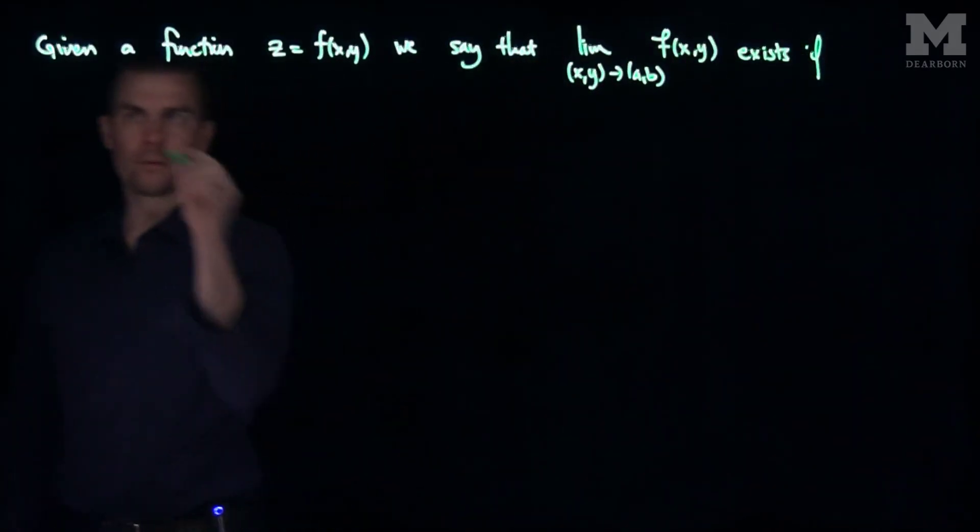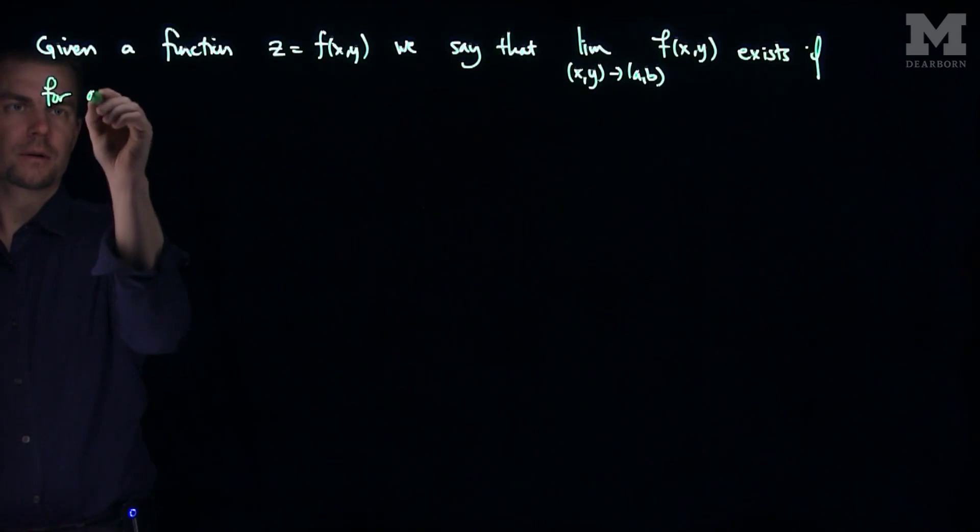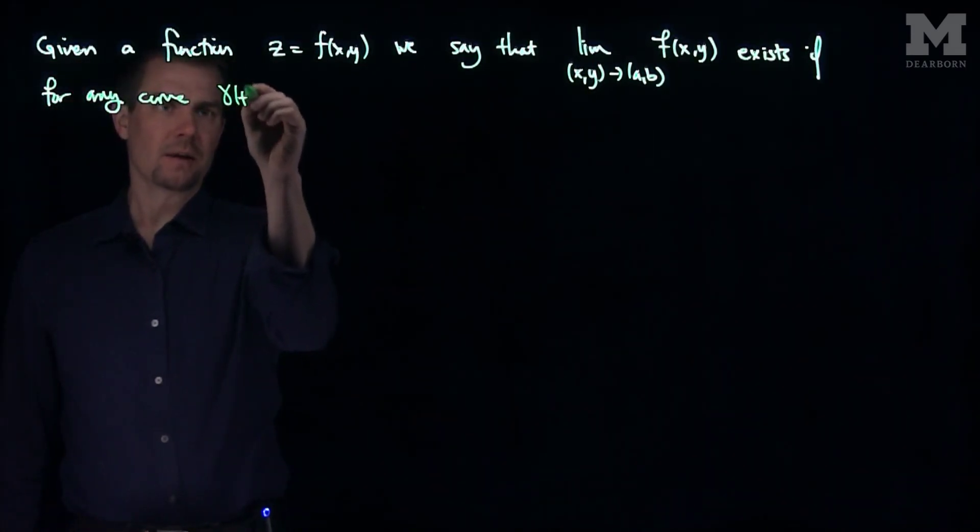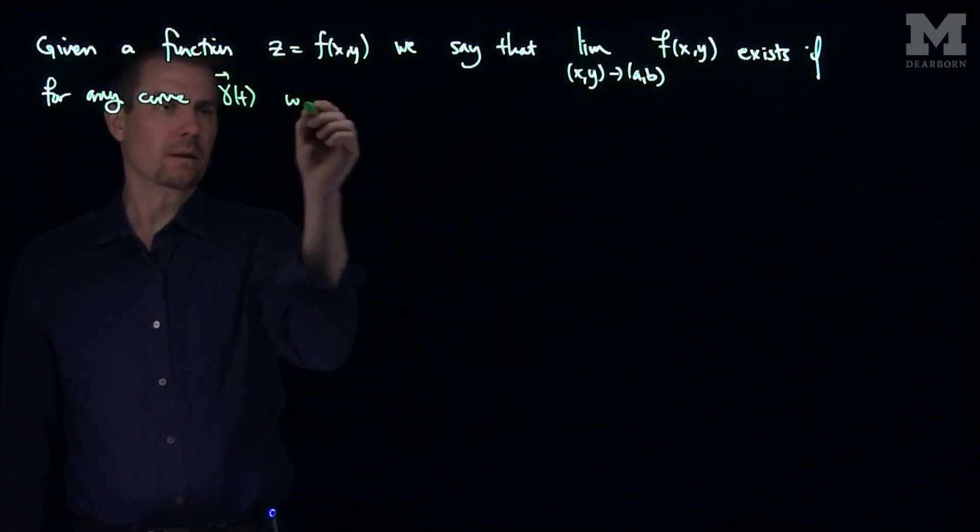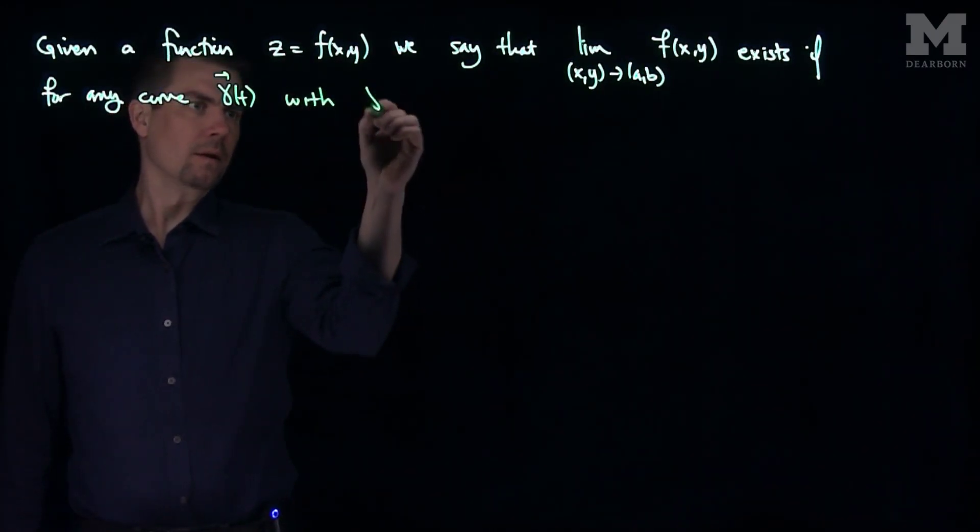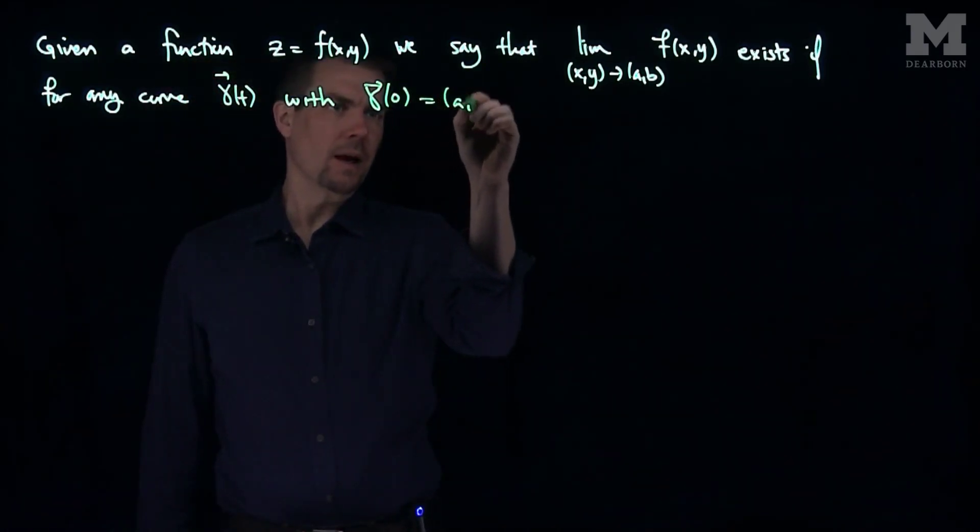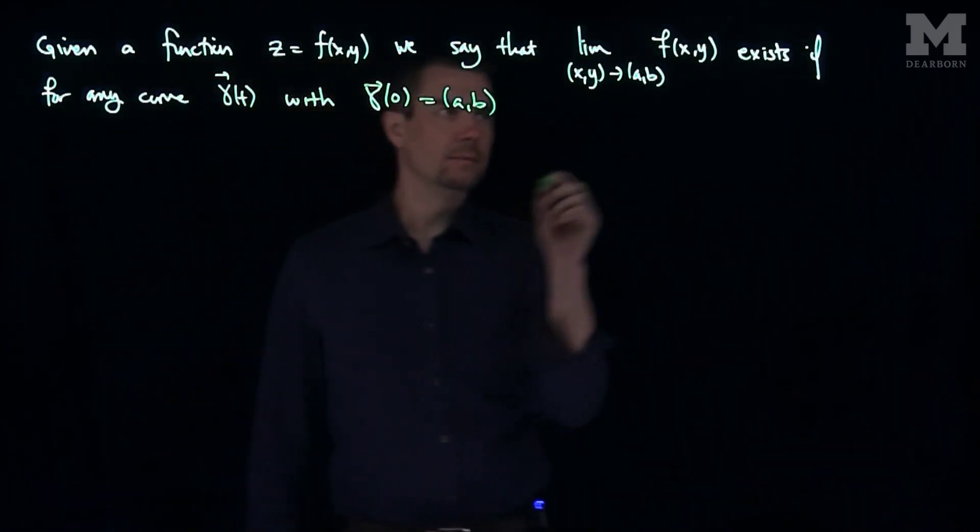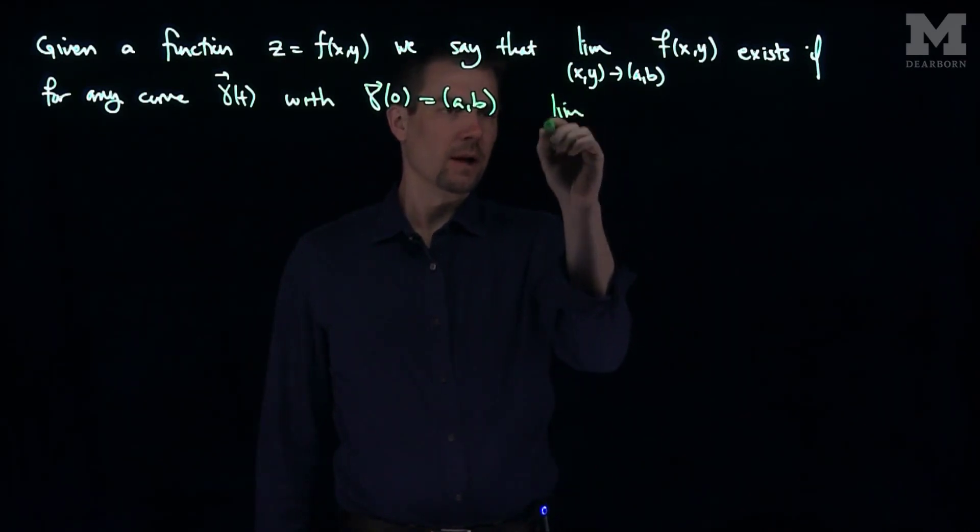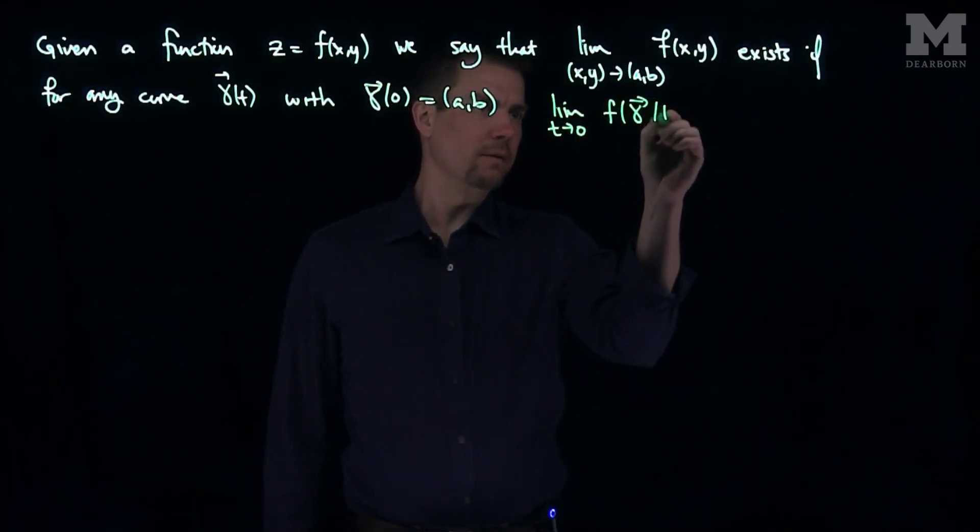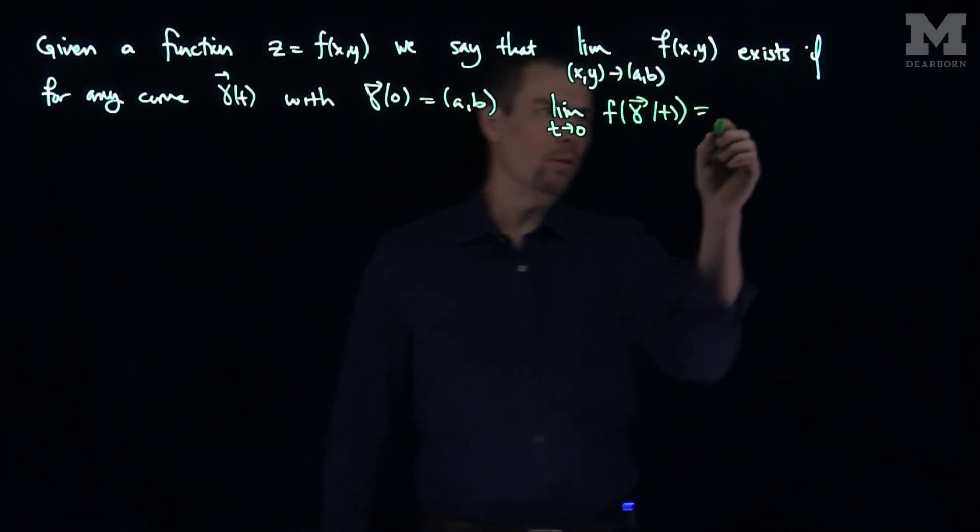for any curve gamma of t with gamma of zero being a, b, the limit as t goes to zero of f of gamma of t is equal to L.